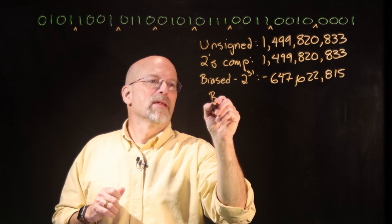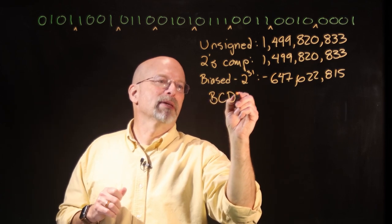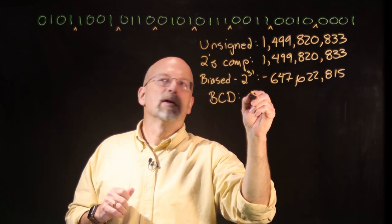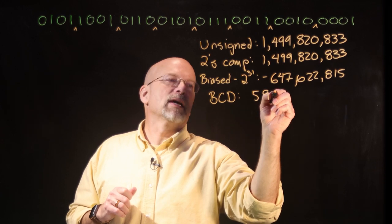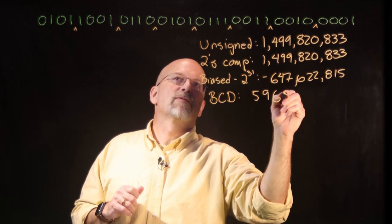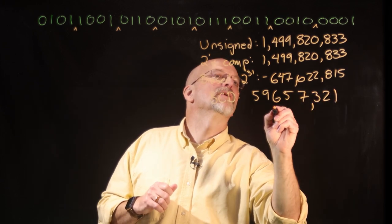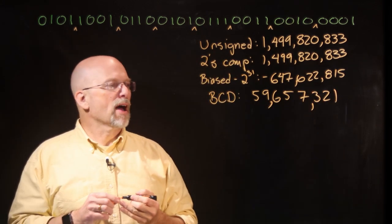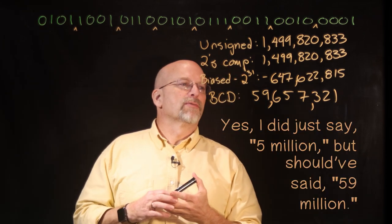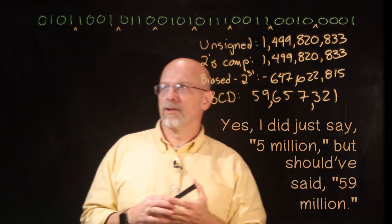So in packed BCD, this would be 5, 9, 6, 5, 7, 3, 2, 1. Put our commas in the right place. 5,657,321.